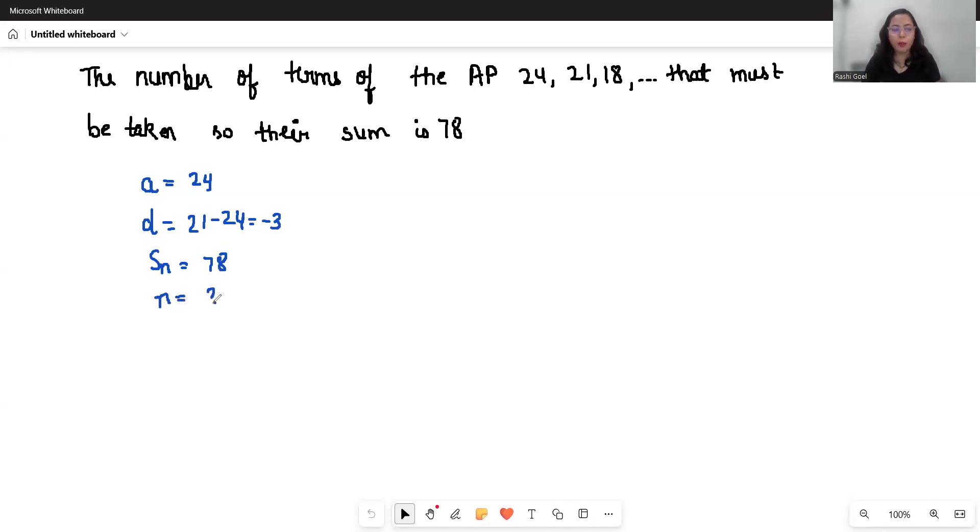So I am going to use the formula Sn equals n by 2, 2A plus n minus 1 times D.